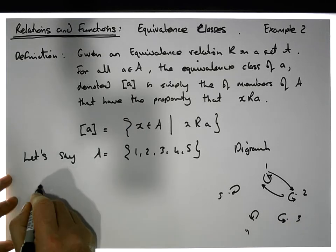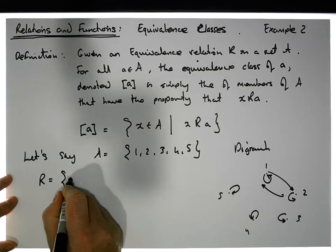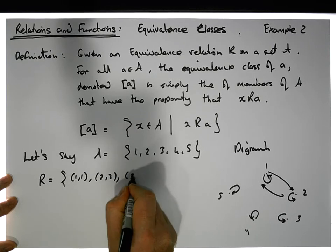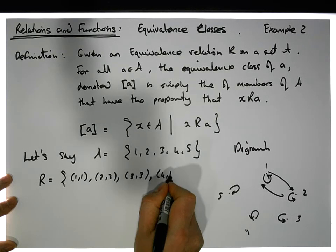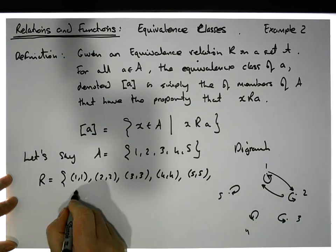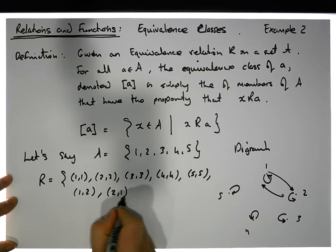So actually this relation here, which is represented by this digraph, let's call it R is equal to the set of ordered pairs, (1,1), (2,2), (3,3), (4,4), (5,5). And the edge going from 1 to 2 and from 2 to 1.